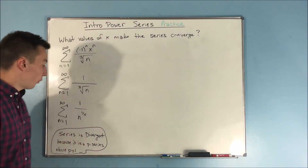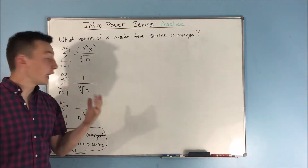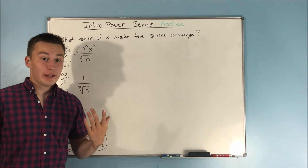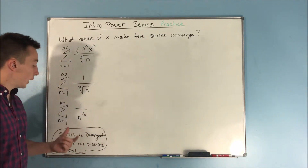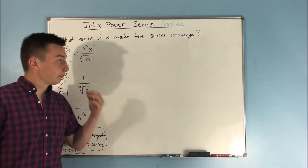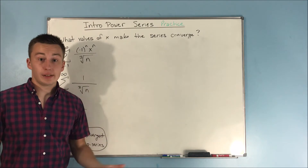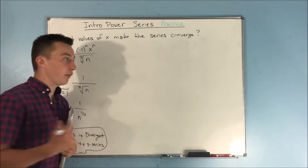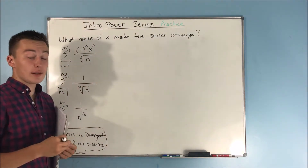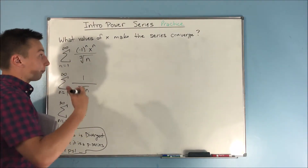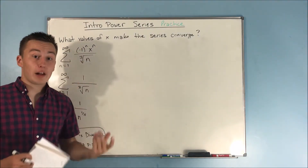Since plugging in x equals negative 1 made our series divergent, that means negative 1 is not going to be included in the interval of x values that make the series converge. Next we need to check: if we plug in x equals 1, will that make the series converge or diverge? Then we'll be able to answer this question in full.